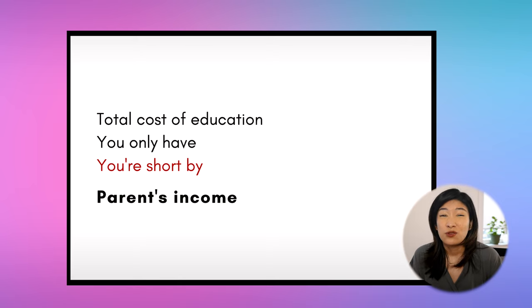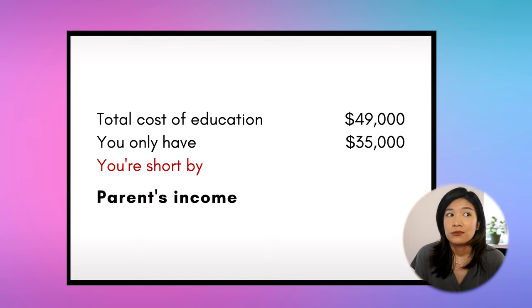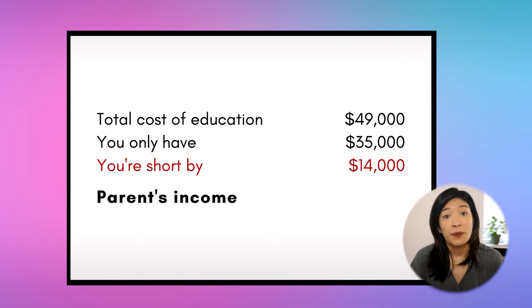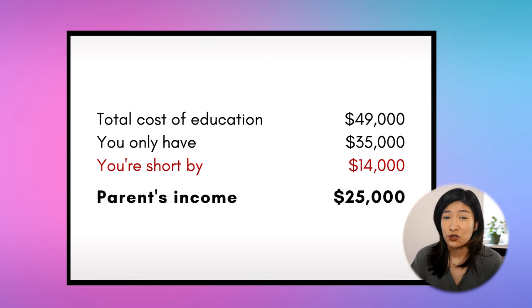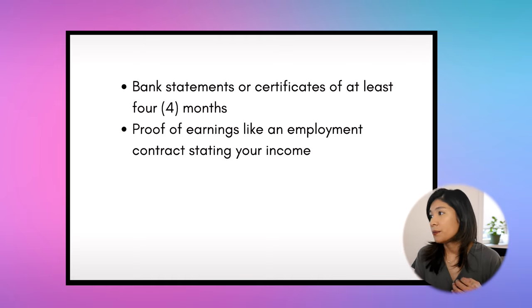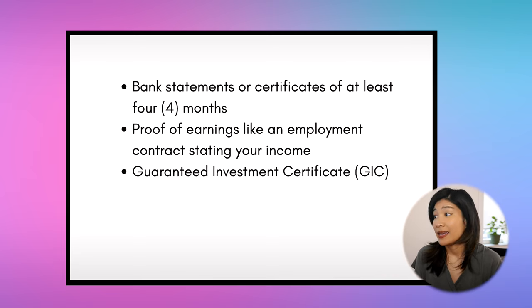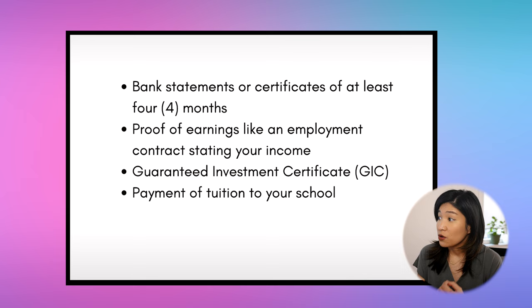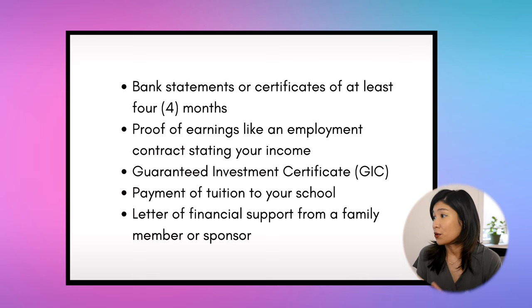As a basic example: let's say the total cost of your education is this much but you only have this much, so you're technically short by this much. If your parents work and earn this much per year and are willing to cover your entire education, then they can write you a letter of financial support stating how they will be covering the rest of your expenses as you pursue studies in Canada. Now that you have enough money or will have enough money, the next thing to consider is how to prove this. Usually you could present the following: bank statements or certificates of at least four months, proof of earnings like an employment contract stating your income, a guaranteed investment certificate, payment of tuition to your school, and a letter of financial support from a family member or sponsor.